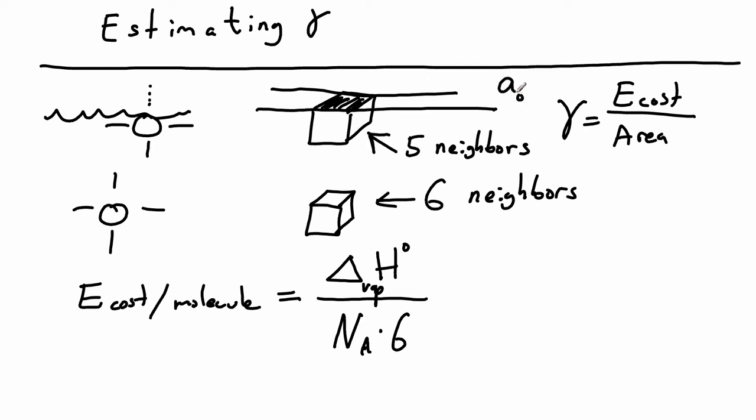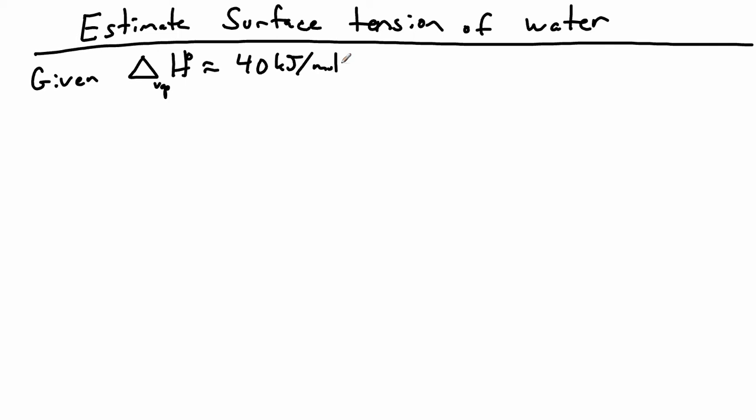Let's call the area occupied by the molecule at the surface a_naught. So our final equation for surface tension, since it's just the energy cost divided by the area, the energy cost we said was delta H of vaporization divided by six times Avogadro's number, and then we divide by the area of our molecule at the surface. Let's do an example applying this to water. We know that surface tension should be approximately equal to heat of vaporization divided by six times Avogadro's number divided by a_naught. So let's figure out what a_naught is first.